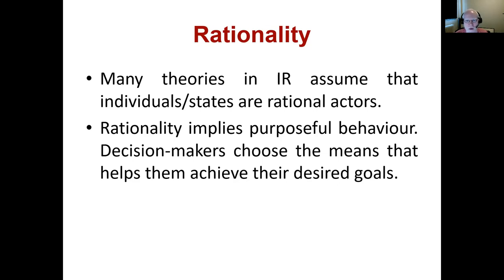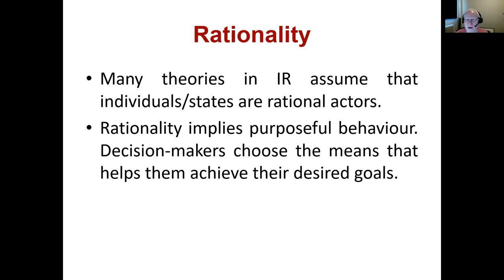We could dedicate an entire course to debates on rationality, so we'll keep it simple here. Rationality implies purposeful behavior: decision makers choose the means that help them achieve their desired goals. They consider different options, weigh costs and benefits, and assess probability of success. They then choose the option that is best given probability of success, costs, and benefits. For our purposes, think of it as purposeful behavior choosing the means that best help achieve the desired ends.